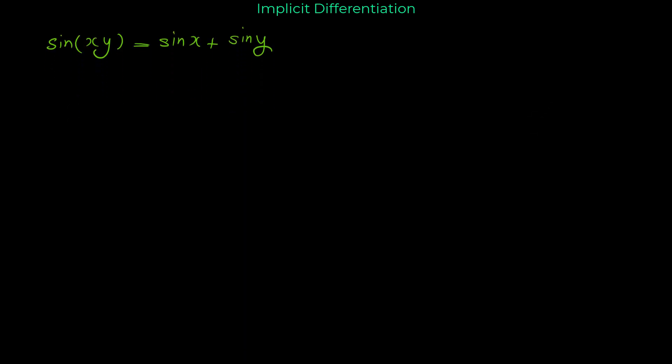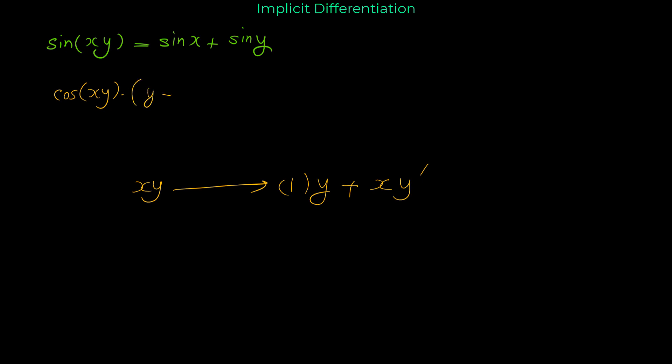Now look at this question: sin(xy) = sin(x) + sin(y). We have an implicit relation, so we use implicit differentiation. We take the derivative of each side with respect to x. The derivative of sine is cosine, so the derivative of sin(xy) is cos(xy), multiplied by the derivative of the inside. The inside is xy; from the product rule its derivative is 1·y + x·y′, giving cos(xy)·(y + x·y′). On the right: derivative of sin(x) is cos(x), and derivative of sin(y) is cos(y)·y′.